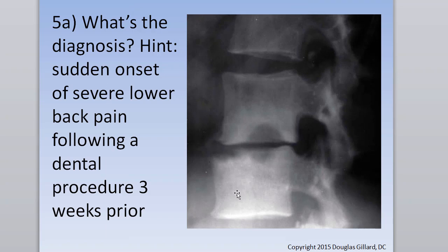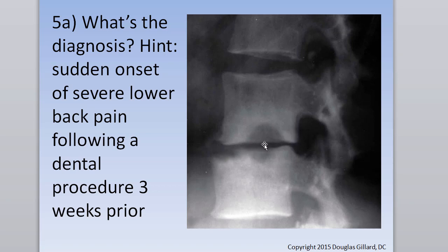Definitely need to worry about this one. The history is the key: the patient had low back pain, never had back pain in his life, had a dental procedure three weeks ago, and now the disc is gone. Here's a normal disc, and now we have all this fluffy-looking bone — this is an infection. We have discitis and osteomyelitis. You've got to say discitis; the disc is completely gone.